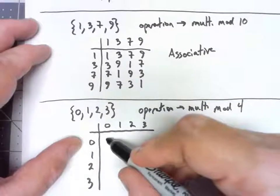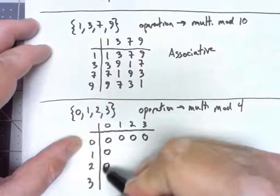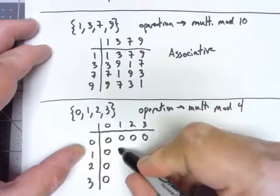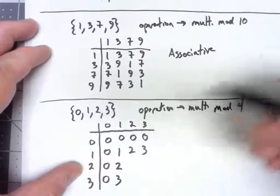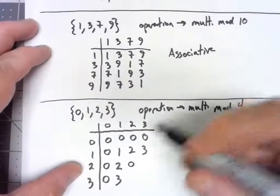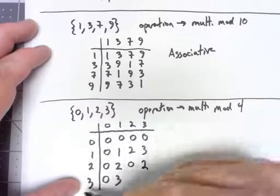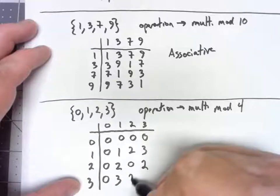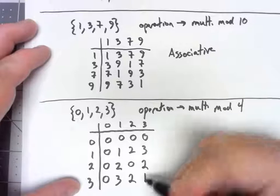Multiplying by 0 is really easy. 2 times 2 is 4, mod 4 is 0. 2 times 3 is 6, mod 4 is 2. 3 times 2. 3 times 3 is 9, mod 4 is 1.